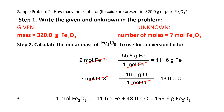Sample problem 2: How many moles of iron oxide are present in 320 grams of pure iron oxide? Step 1: the given is 320 grams of iron oxide, and the unknown is the number of moles of iron oxide. Step 2: calculate the molar mass in order to use it as the conversion factor.